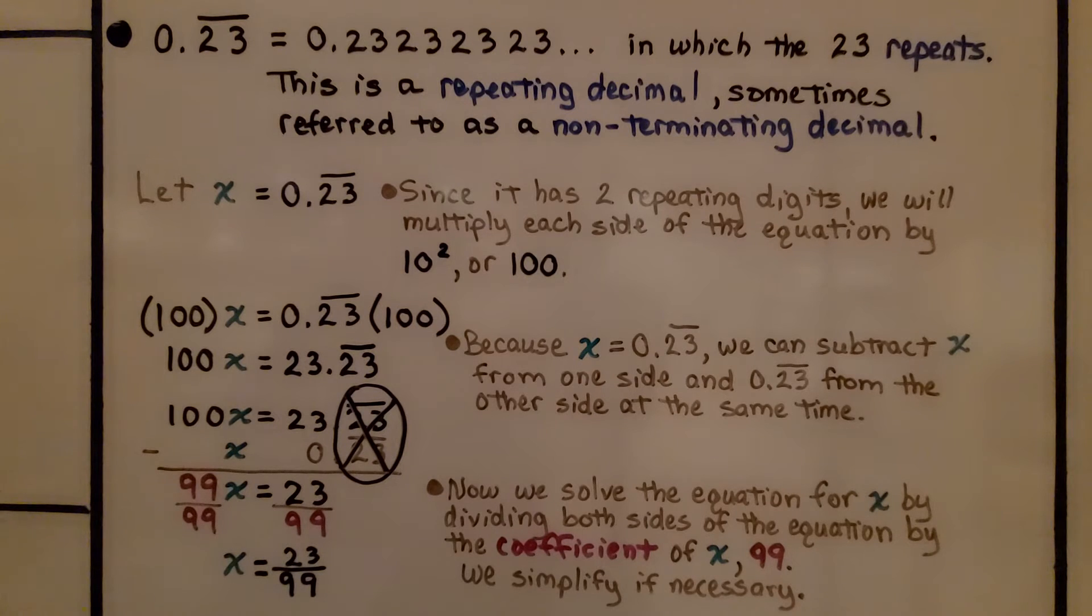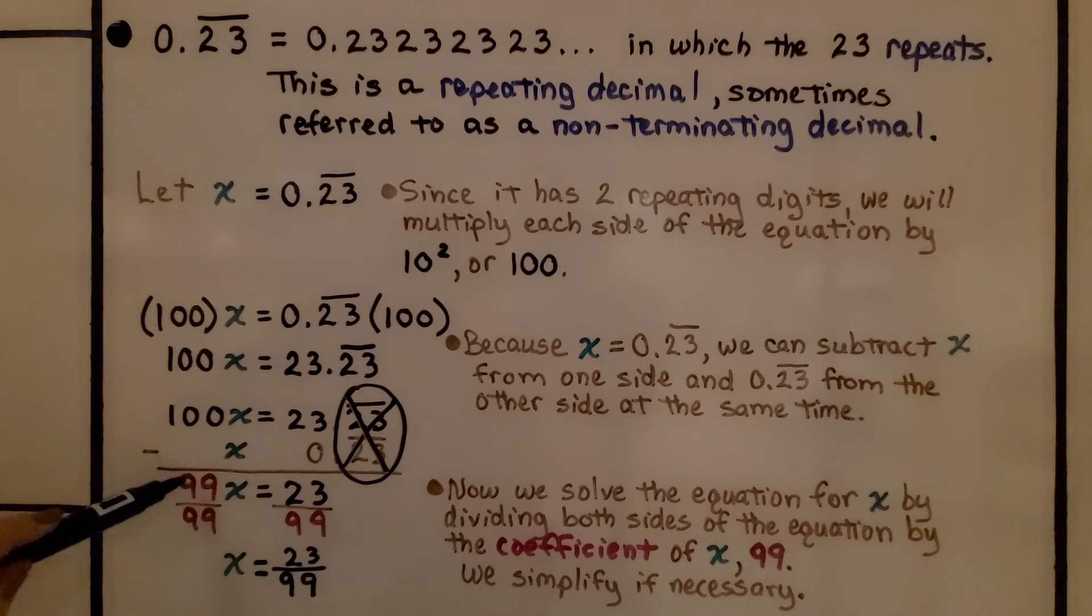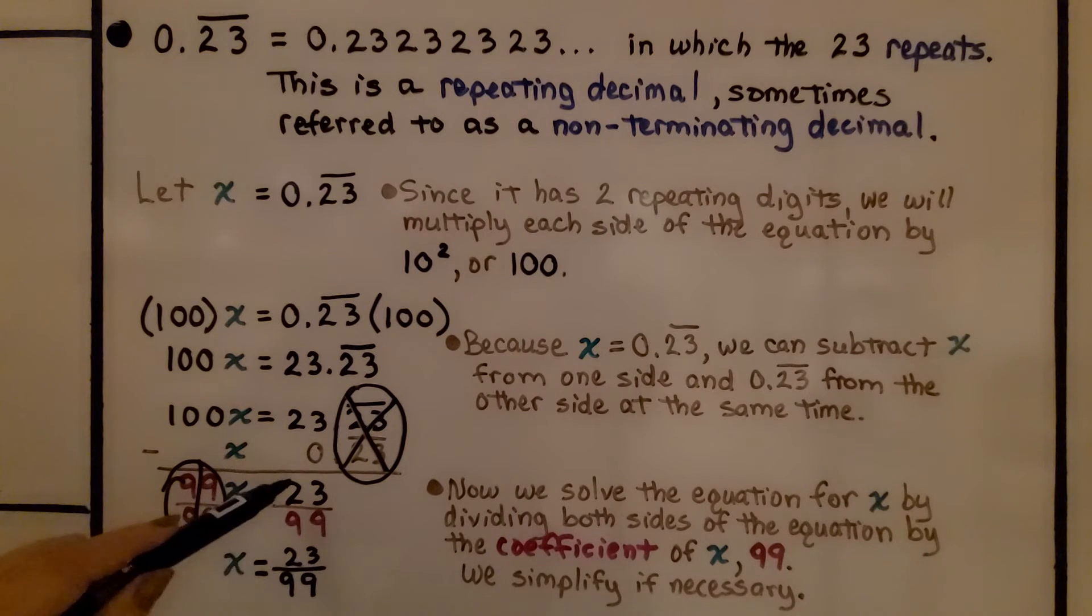Now, we solve the equation for x by dividing both sides of the equation by the coefficient of x, which is 99. We're right here. So, we're going to divide both sides of the equation by this pink 99 coefficient. 99 divided by 99, same numerator and denominator, is going to give us a 1. So, we have 1x here and we have 23 99ths on this side. And we simplify if necessary.